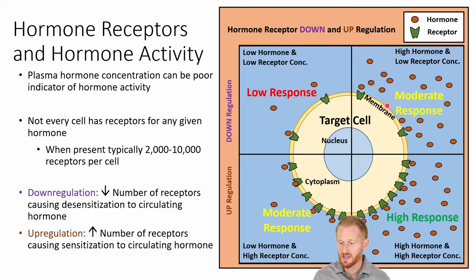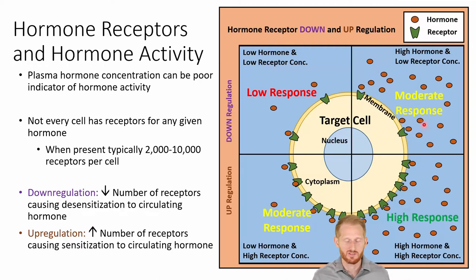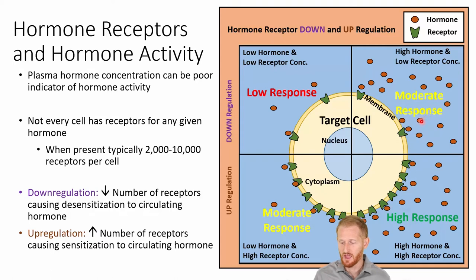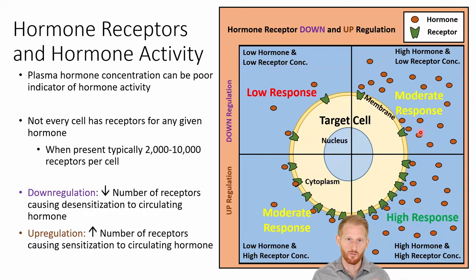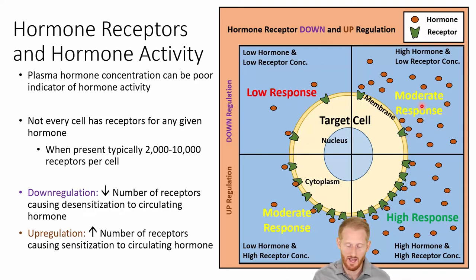If we increase the amount of hormone floating in the bloodstream but don't increase the number of receptors, we're going to get a more moderate response. This is because the hormone receptors are pretty much always going to be bound to hormone. As soon as one hormone molecule is broken down, another is ready to take its place. So you get a more moderate response.